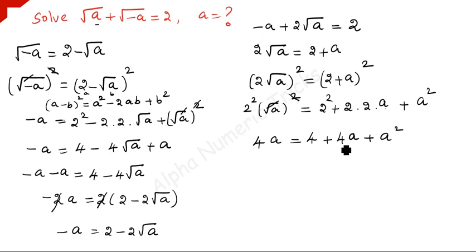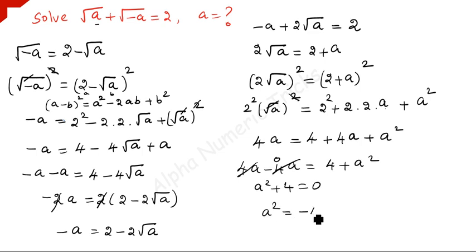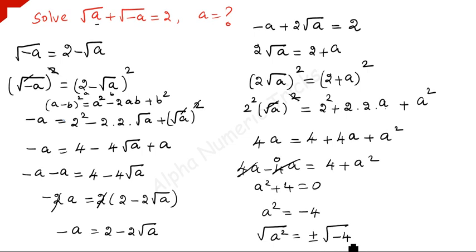So a squared plus 4 equals 0, which gives a squared equals minus 4. Taking square root on both sides, square root of a squared equals plus or minus square root of minus 4.